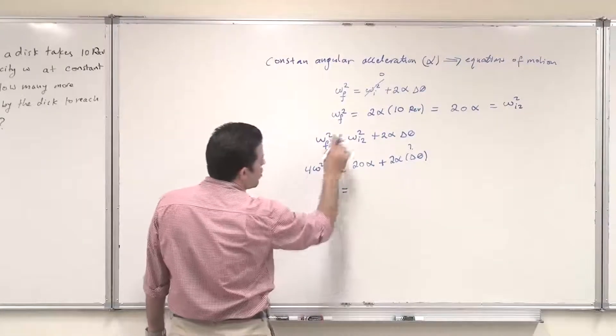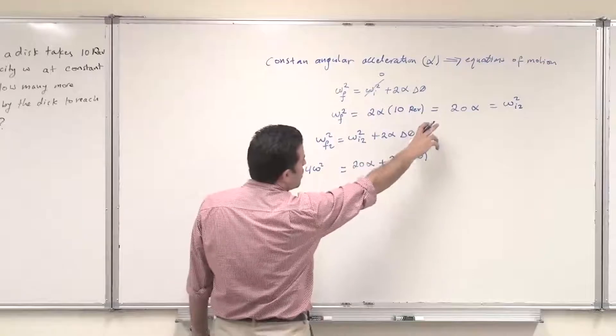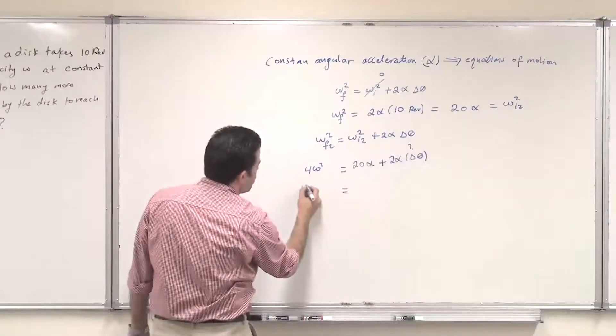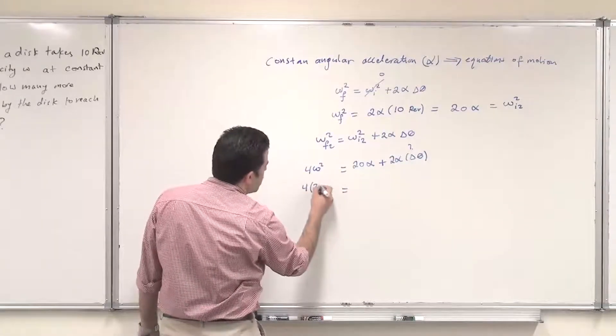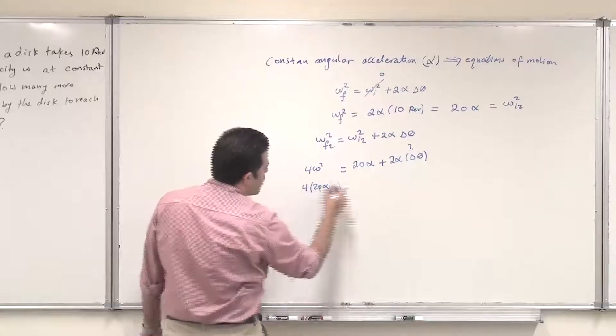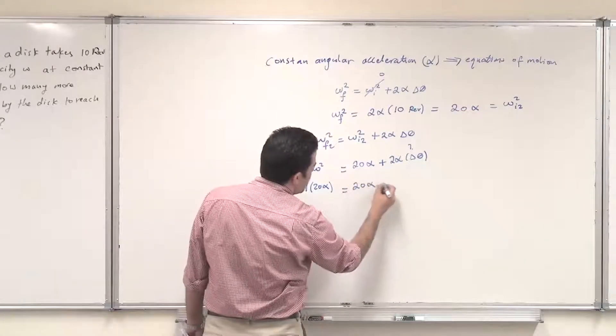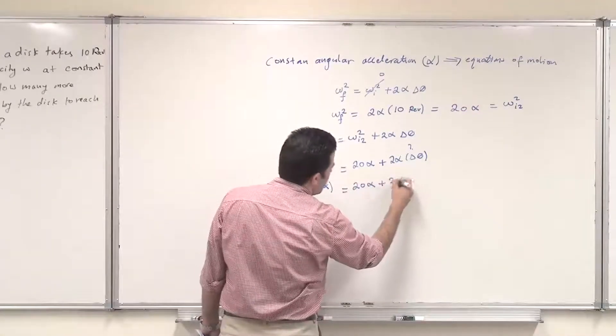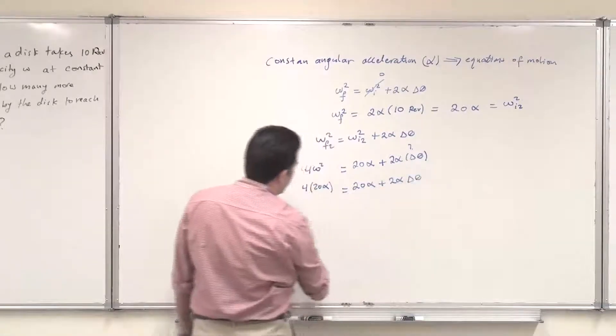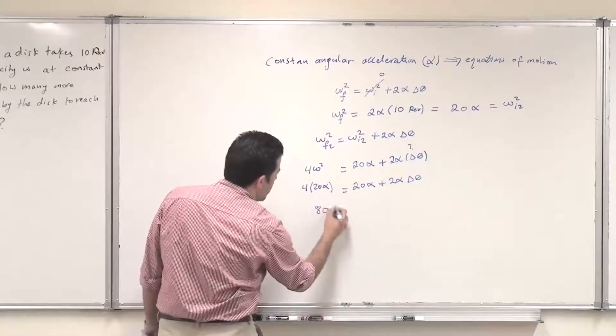Since omega squared is 20 alpha, this is 4 times 20 alpha. And this should equal 20 alpha plus 2 alpha delta theta. So this is 80 alpha.